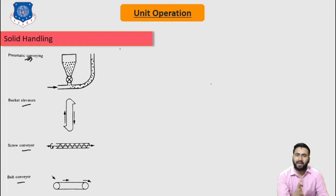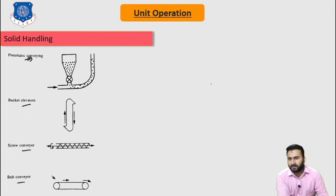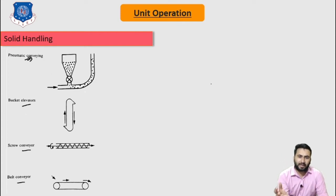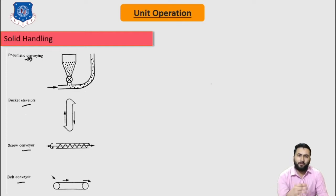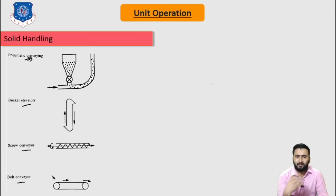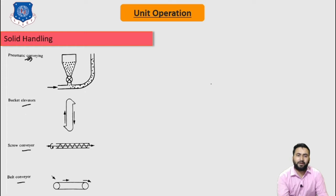The bucket type elevator is used for elevating materials and can be used for moving powder or granular material from storage or between reaction vessels, such as in a movable bed reactor or catalytic process.